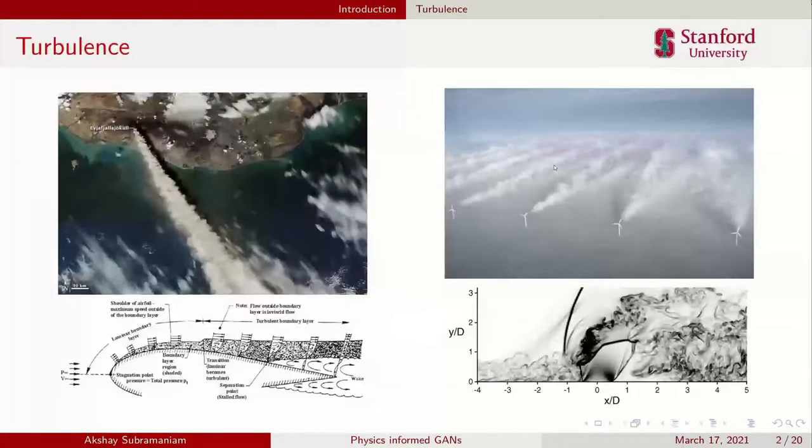Turbulence is ubiquitous in climate and engineering applications involving fluid flows. The challenge with simulating turbulent flows is that there's this huge range of scales. In an atmospheric boundary layer, for example, you go from a kilometer to a few millimeters from the largest to the smallest scales. It's really infeasible to simulate all of that in first principles.